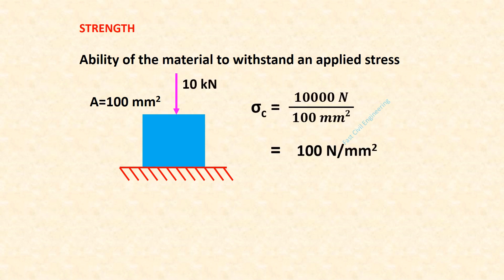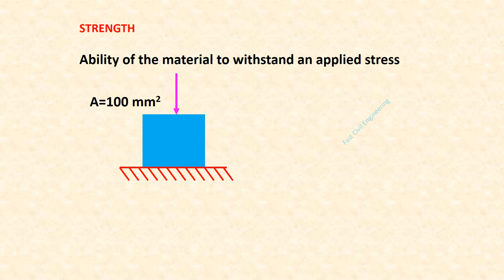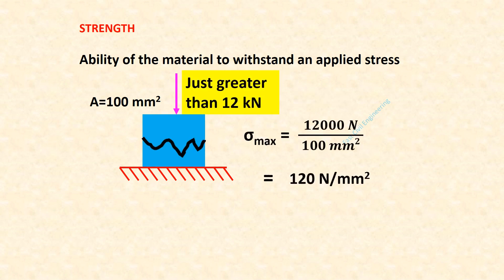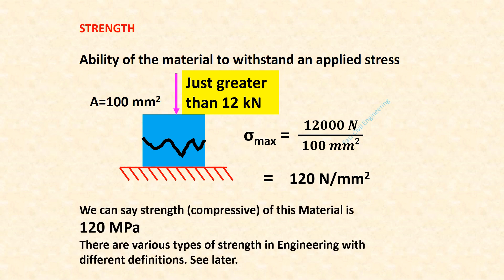Now force is 10 kN, sigma-c is 100 MPa. Now force changes to 12 kN. When force applied is just greater than 12 kN, failure occurs — that is sigma-max equals 120 MPa. We can say the strength of this material is 120 MPa. That is actually compressive strength, 120 MPa.